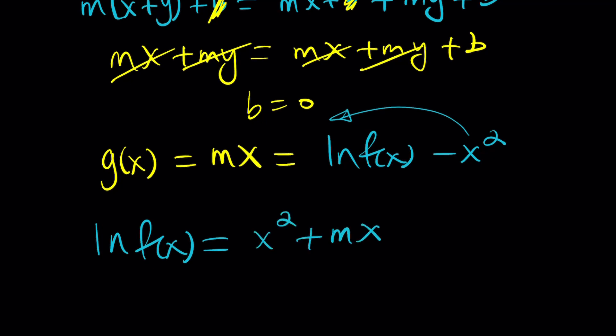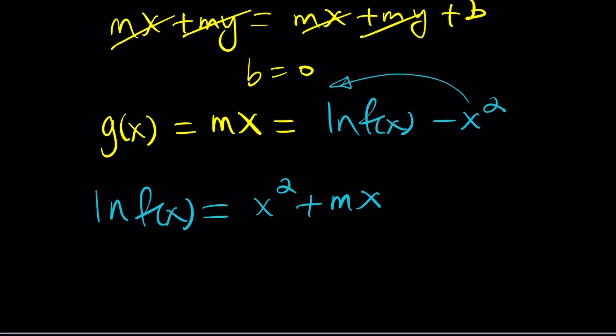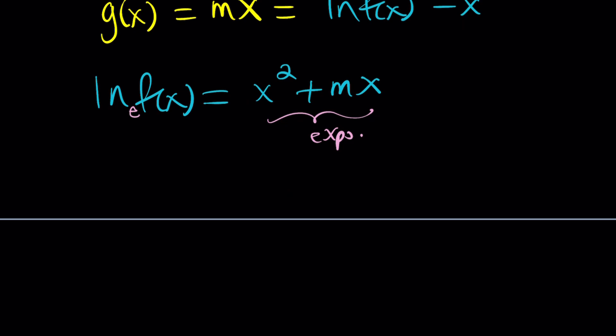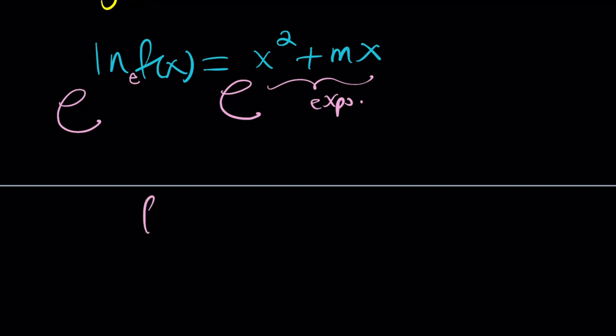Since we're looking for f of x, that's what we're trying to solve for. We're going to do e to the power of both sides. Or you can think about the definition of the natural log. This is the base, and this is the exponent. And we're going to write it in exponential form. Or you can simply do e to the power of both sides, which is a lot easier in most cases. And this gives us f of x because e to the power of ln something equals something. And f of x will be e to the power x squared plus mx.